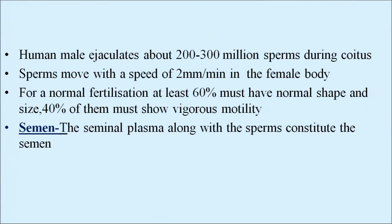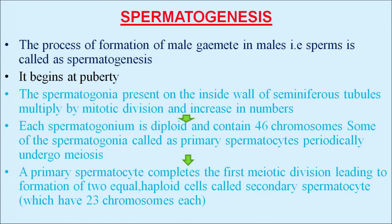The tail facilitates sperm motility, which is essential for fertilization. The human male ejaculates about 200 to 300 million sperms during coitus. Sperms move at a speed of 2 mm per minute in the female body. For normal fertilization, at least 60 percent must have normal shape and size and 40 percent must show vigorous motility. Semen is not only sperms — it is seminal plasma along with sperms.